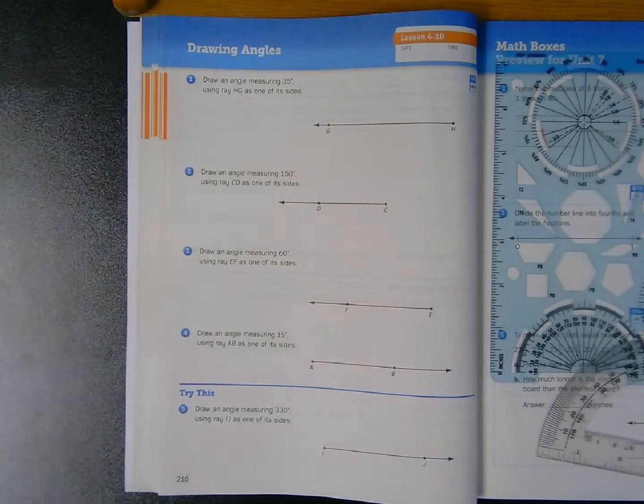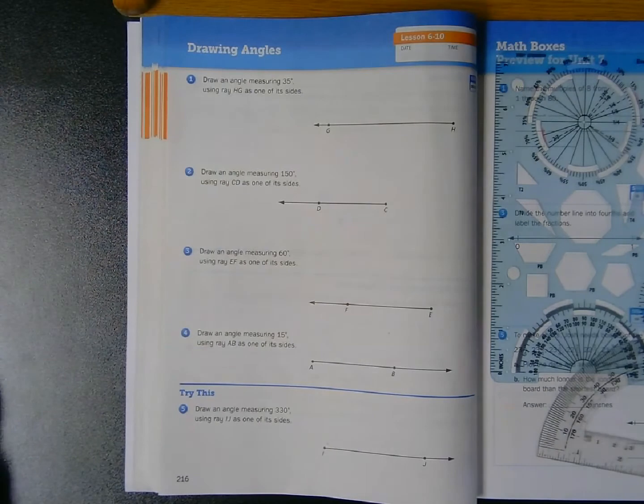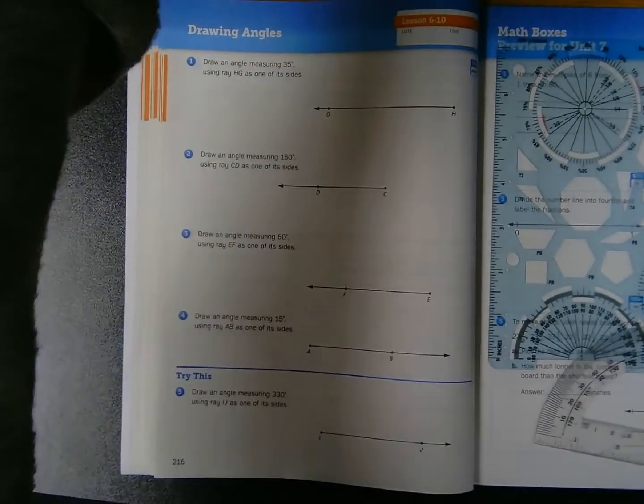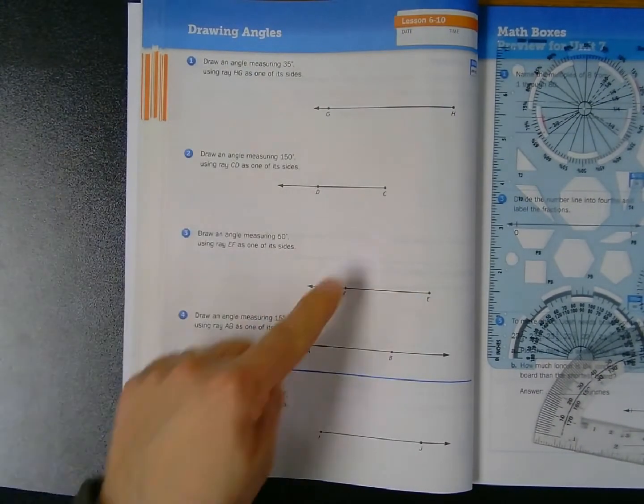Well hi boys and girls, it's Mr. Wassman, and today we are going to be drawing some angles. We are in our math journal volume 2 unit 6 lesson 10, and I am on page 216.